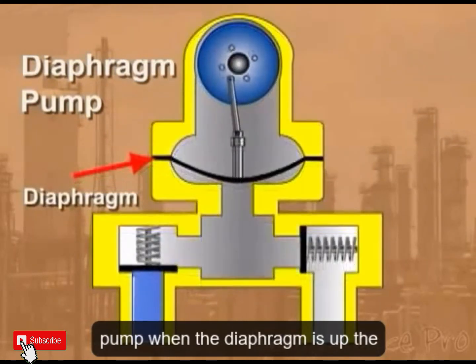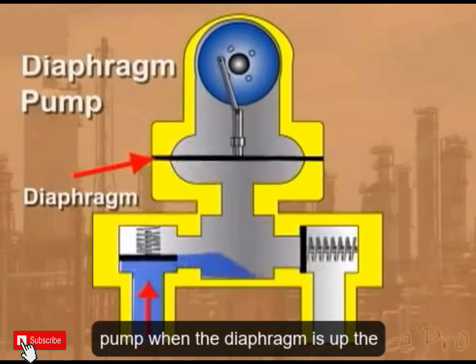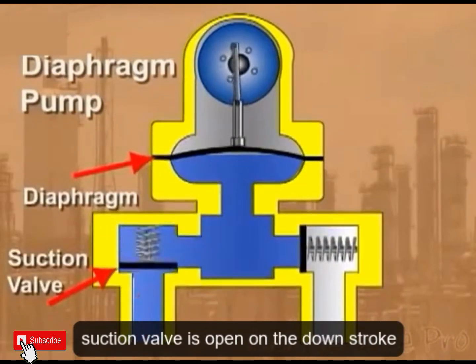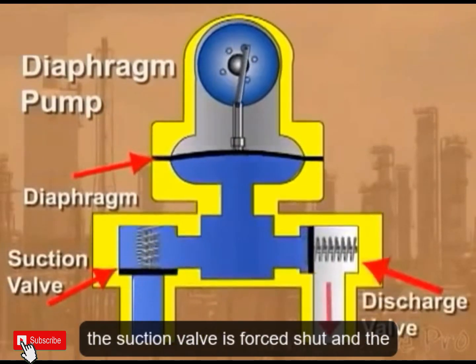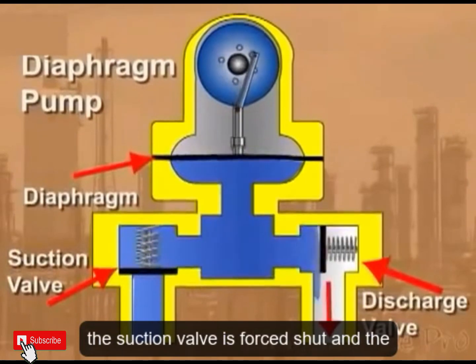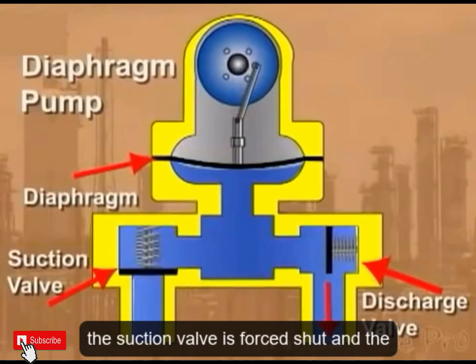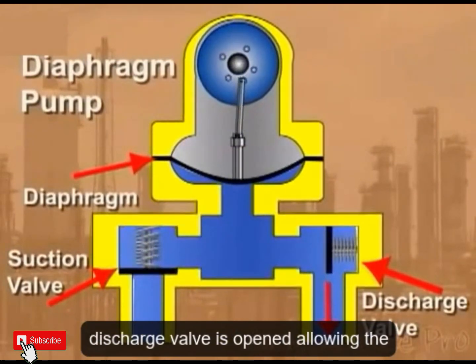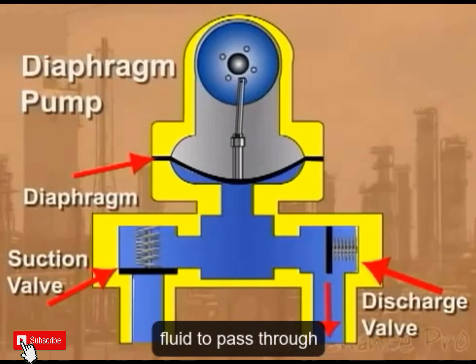When the diaphragm is up, the suction valve is open. On the downstroke, the suction valve is forced shut and the discharge valve is opened, allowing the fluid to pass through.